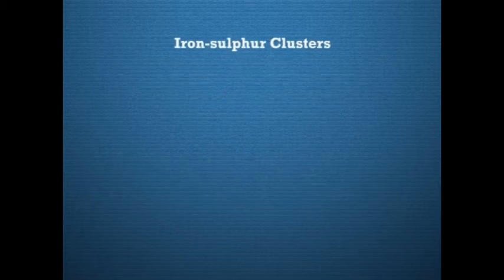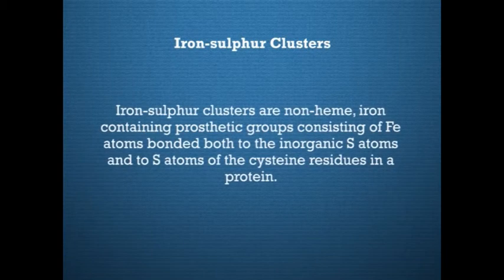Now let's see the iron-sulphur clusters. Iron-sulphur clusters are non-heme iron-containing prosthetic groups consisting of iron atoms bonded both to inorganic sulphur atoms and to the sulphur atoms of cysteine residues in a protein. Iron-sulphur clusters accept and release electrons one at a time. At least eight iron-sulphur clusters function in mitochondrial electron transfer.